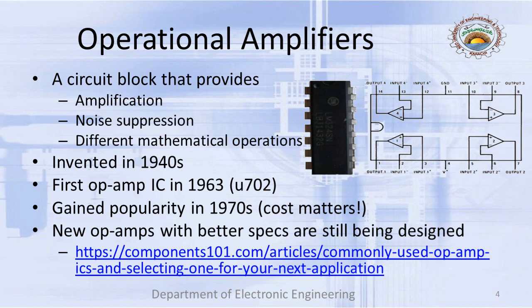One quick fix is to use an op-amp in inverting or non-inverting configuration, and there you have it — you can amplify the signal. For instance, the LM324 is a commercially available op-amp that contains four operational amplifiers in a single package, with offset nulling internally compensated. Whereas I'm asking just for one amplifier, you get four. The cost has come down to such a point that it doesn't make much difference.